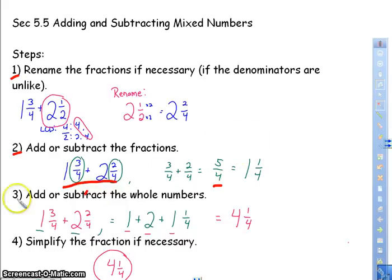So now I'm going to add or subtract the whole numbers. So I have 1 plus 2, but I also have 1 plus 2 plus 1 1/4, and that was from when we combined our fractions. So 1 plus 2 plus 1 is 4, and the 1/4 is just going to carry on from the fractions we added prior to that. And then if necessary you're going to simplify your fraction and that's your last step. So we're going to rename the fractions, add or subtract the fractions first, then add or subtract the whole numbers, and then simplify the fraction if need be.